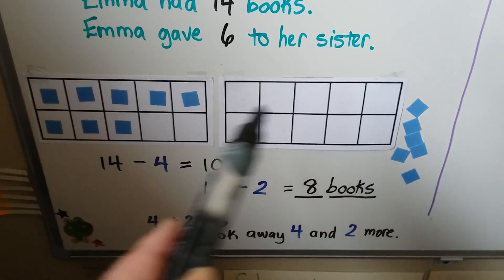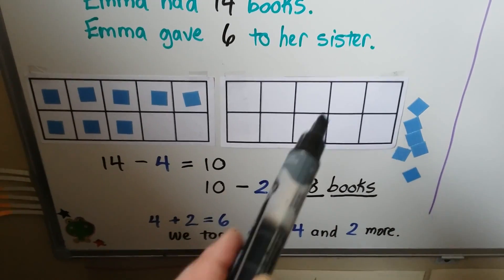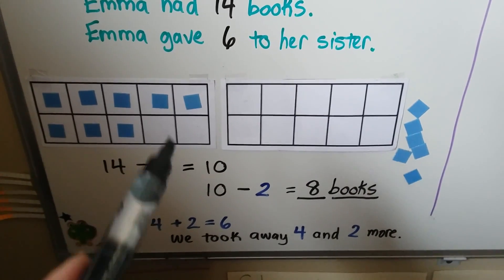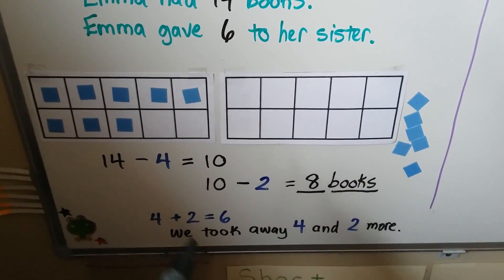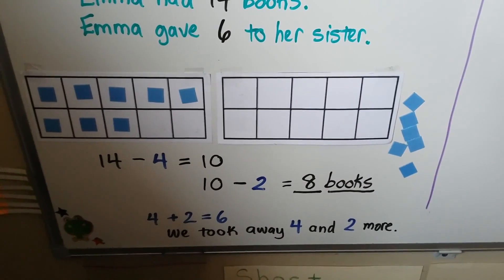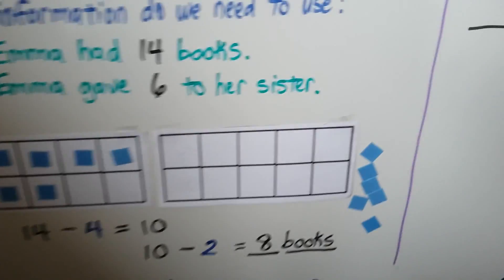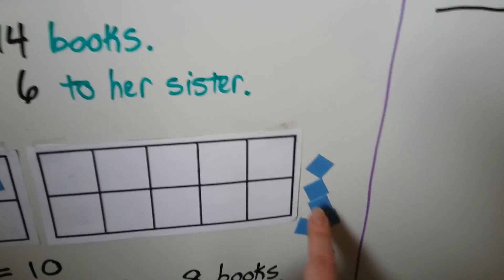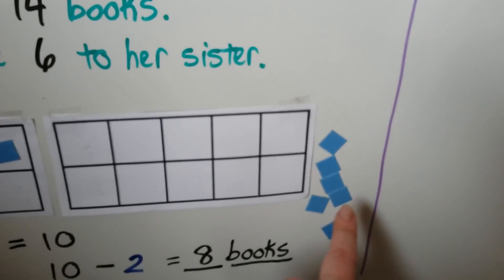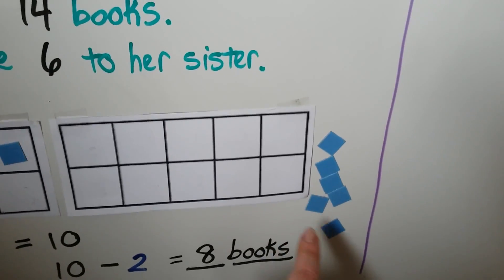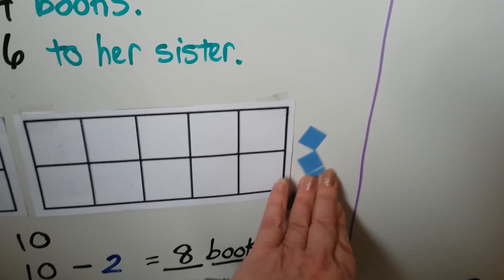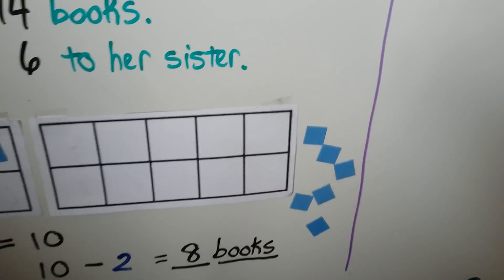The 4 we took away from here. The 2 we took away from here. 4 plus 2 equals 6, so we took away 4 and 2 more. We took away 1, 2, 3, 4, 5, 6. We took away these 6.